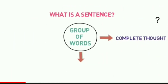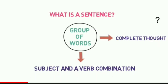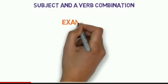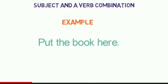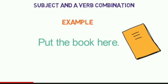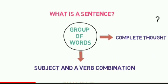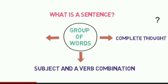A very important characteristic of a sentence is that it must have a subject and a verb. Now there's a catch — sometimes the subject is not given but is understandable. For example, 'Put the book here.' Here the subject is not given, but 'you' is the implied subject.